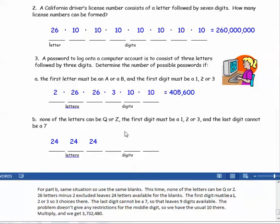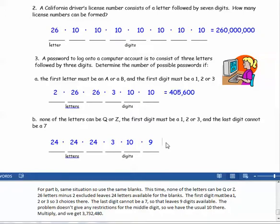The first digit must be a one, two, or three, so there are three choices there. The last digit cannot be a seven, so that leaves nine digits available, ten minus the one that's excluded. The problem doesn't give any restrictions for the middle digit, so we have the usual ten there. Multiply, and we get three million seven hundred thirty-two thousand four hundred and eighty.